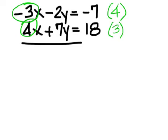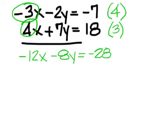Now on the top, when you multiply 3 by 4, you get negative 12x minus 8y equals a negative 28. And on the bottom, when you multiply 3 by 3, you get 12x plus 21y equals 54.